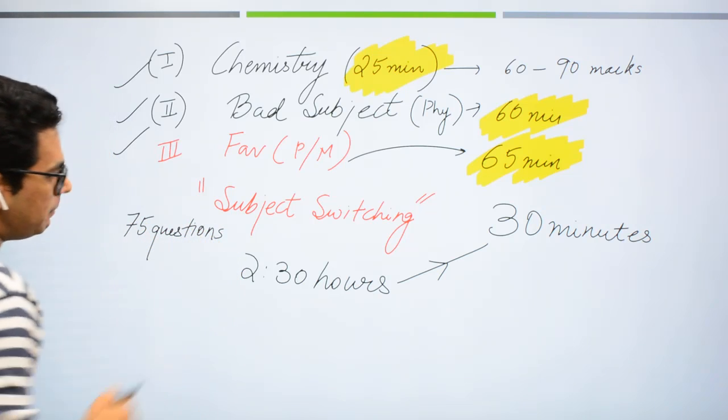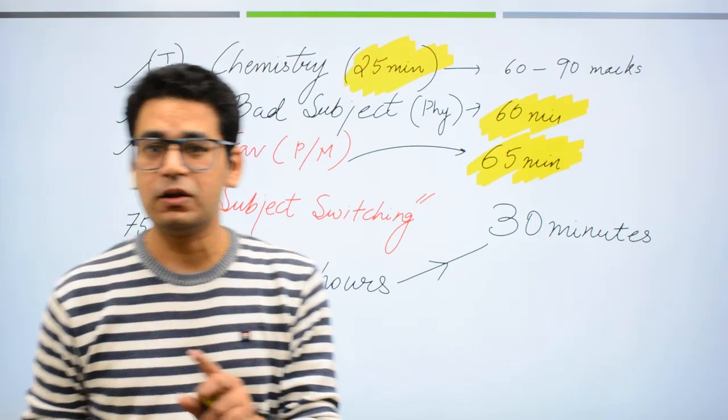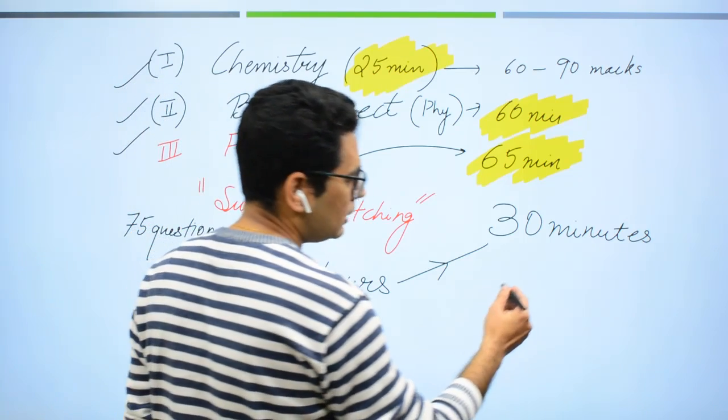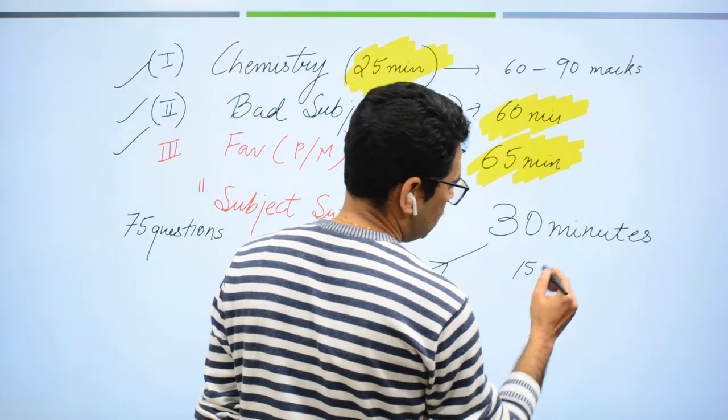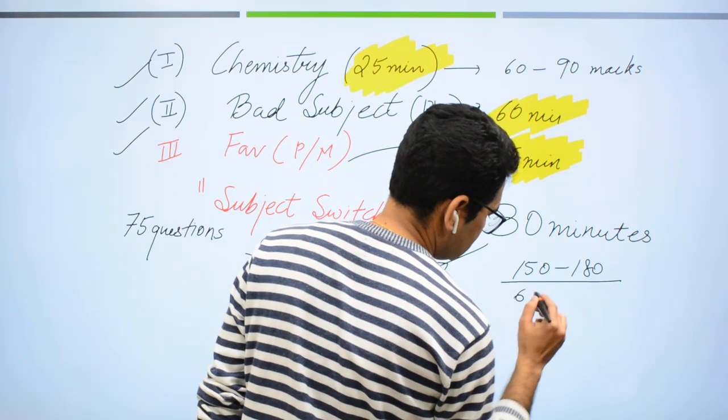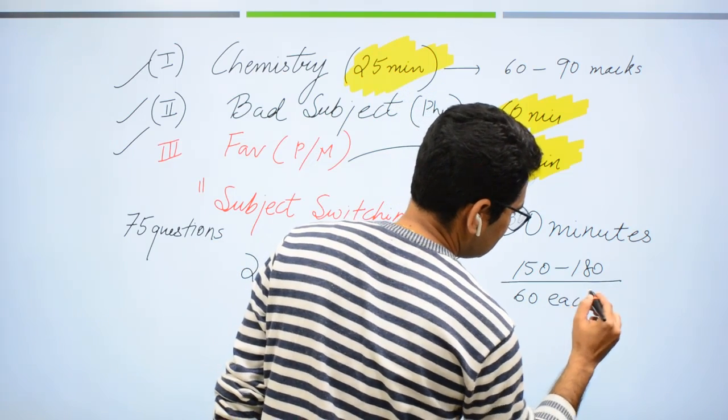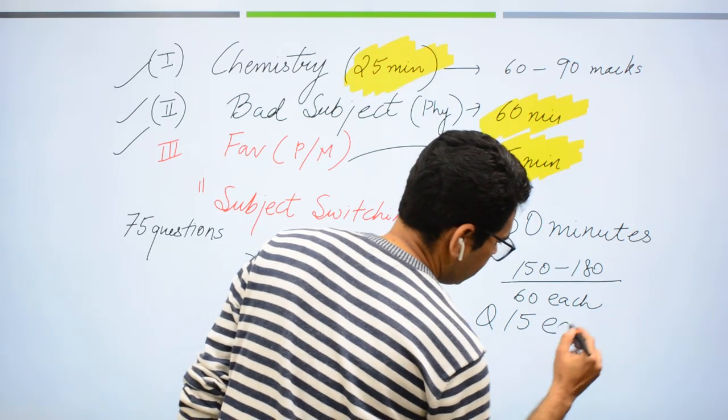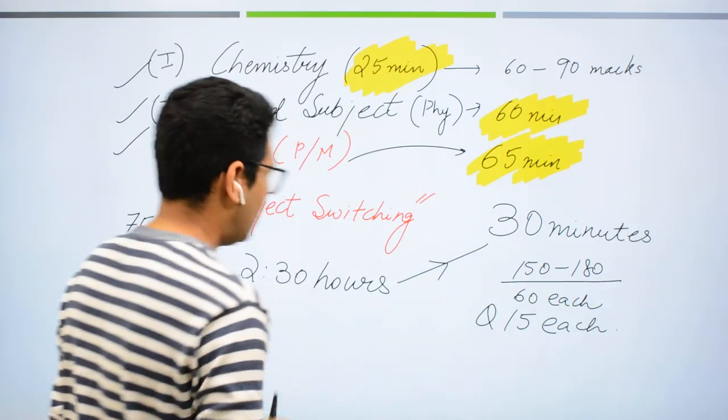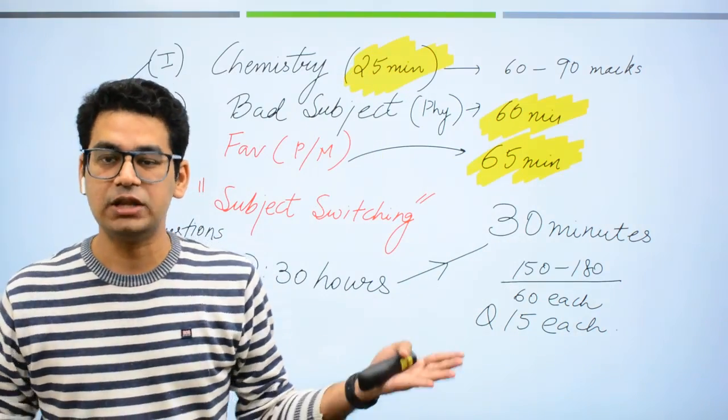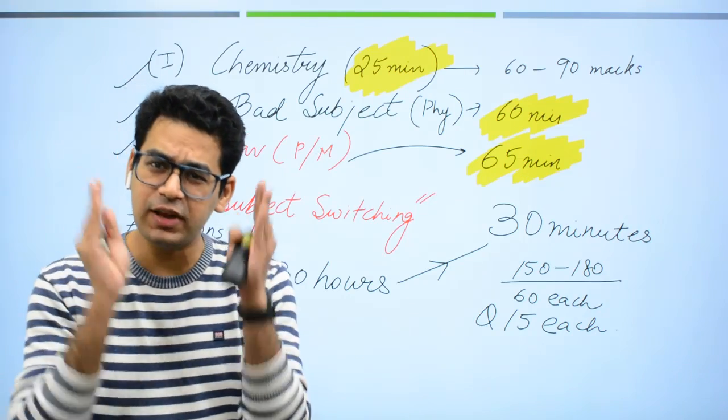Mein bar bar repeat kiya hun mera target 75 questions solve karna hai hi nahi. Agar mein apna target na dharat karta hun ki sir mujhe toh 150 to 180 marks bana lena hain. Toh 180 ke liye aap notice karo aapko 60, 60 each, 60 each ka matlab 15 questions each. 15 questions each ka matlab huwa aapko yaar 45 questions ke liye 3 ghante mil raha hai yaar matlab it's more than enough that you guys can ask, it's a very very simple thing.